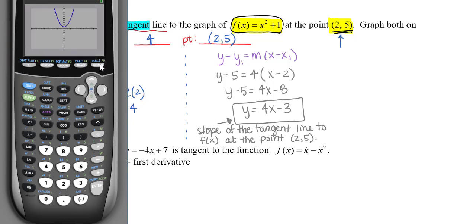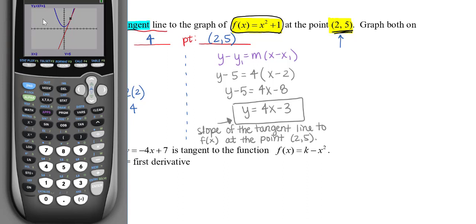Putting in the correct answer, I'll use the calculate menu — second trace — to evaluate at x = 2. My original function y1 = x² + 1 should pass through (2, 5), and if I arrow up to the tangent line it should also show y = 5 at x = 2. That point is on both the original function and the tangent line — that's the point of tangency — so the answer looks very reasonable.